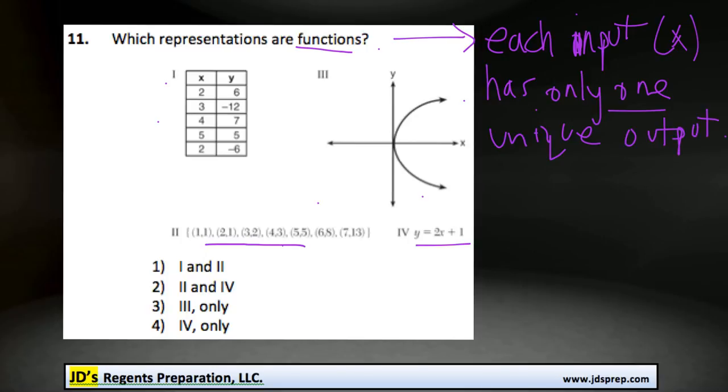So for example, something that would not be a function is if you inputted the number 1 and it was possible that there are two different outputs that could come from it, like 2 and 3. Then that would not be a function.